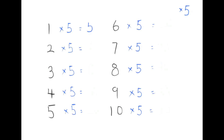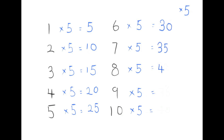1×5 is 5, 2×5 is 10, 3×5 is 15, 4×5 is 20, 5×5 is 25, 6×5 is 30, 7×5 is 35, 8×5 is 40, 9×5 is 45, 10×5 is 50.